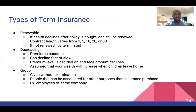There are three types of term insurance: renewable, decreasing, and group. For renewable, if your health declines after the policy is bought you can still renew it; the contract length varies from one to thirty years and if it's not renewed it'll be terminated. For decreasing, premiums are constant while face amounts decline — it's assumed that your wealth will increase as your children leave home. For group insurance, it's given without examination to people associated for purposes other than insurance, such as employees of a company.